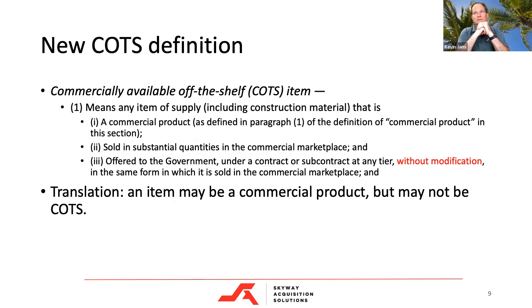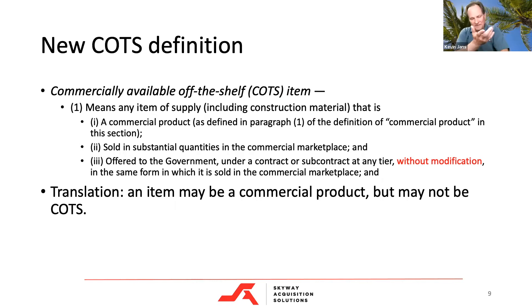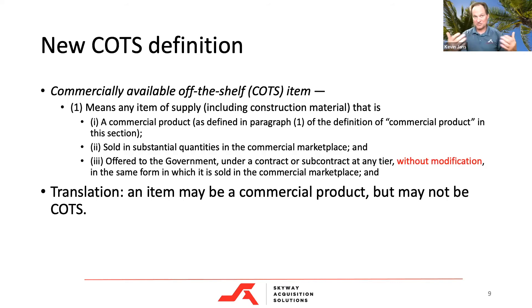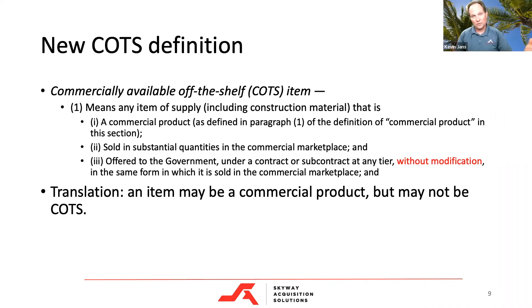The commercially available off-the-shelf item: if it's going to be slightly modified in a way that's common in the commercial marketplace, that applies. Commercial off-the-shelf means without modification — that's the biggest difference. An item may be a commercial product but not a commercial off-the-shelf product. For purposes of FAR Part 12, it's the same thing in terms of eligibility, but it's important to understand. A COTS item is like a square — a commercial item isn't always COTS, particularly when selling to a nuanced customer like DOD.